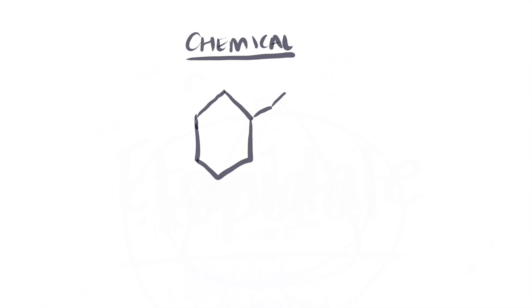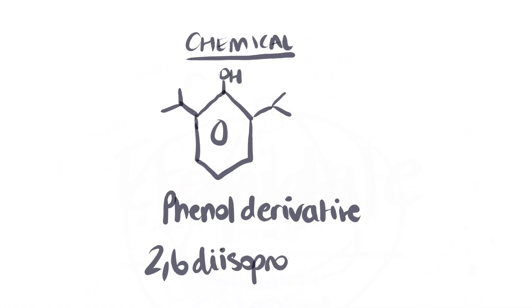Chemical. Propofol is a phenyl derivative. Its specific chemical formula is 2,6-diisopropylphenol. Whilst not mandatory, it is probably a good use of time to be able to draw the basic chemical structure.